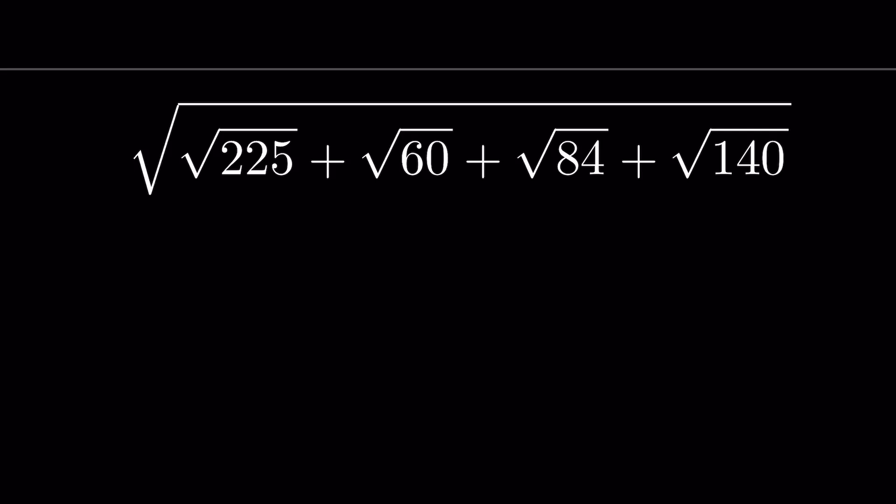Simplify √225 + √60 + √84 + √140 under square root without using a calculator. Let's start: the square root of 225 is 15.